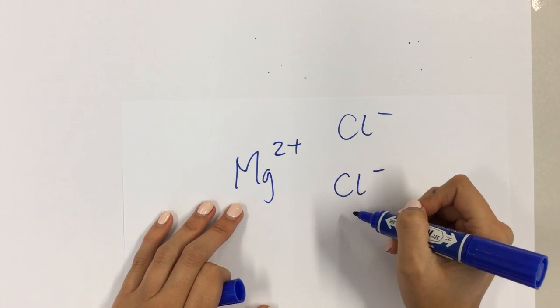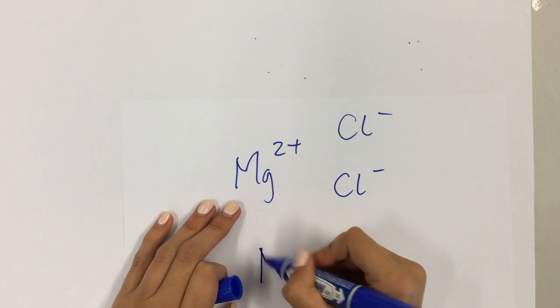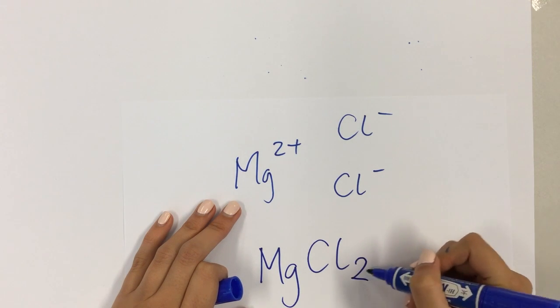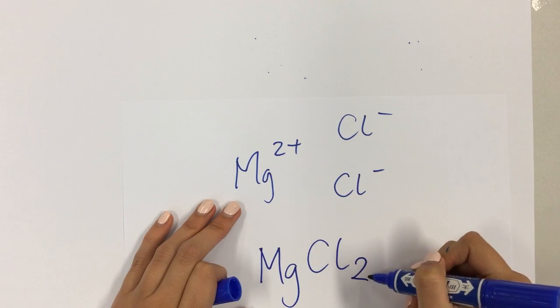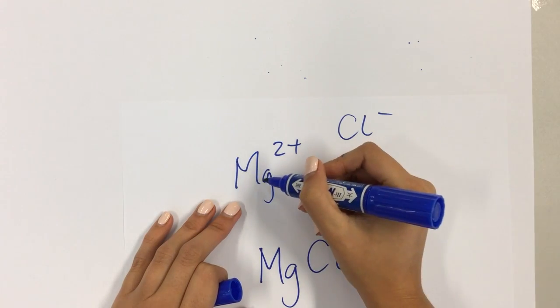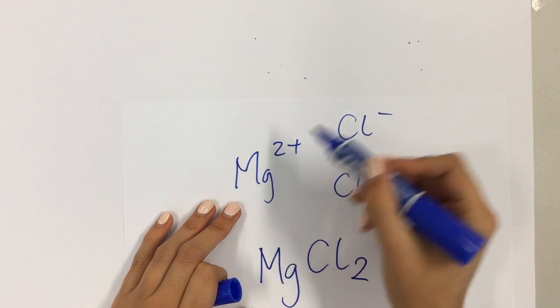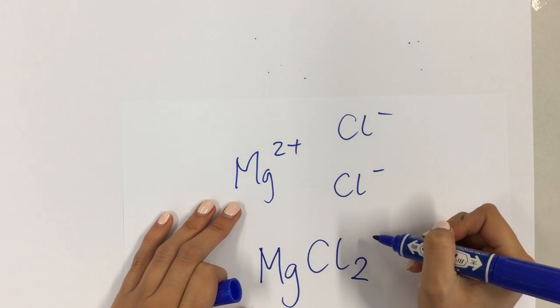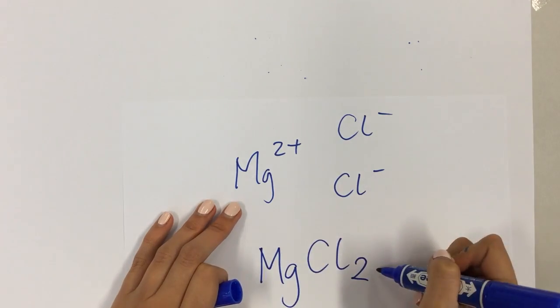The way that we write the formula for this is we write it as MgCl2, and all that means is that you need two chlorines for every magnesium, which makes sense because I need two spaces to put those two electrons in to make them all balance out. So, MgCl2.